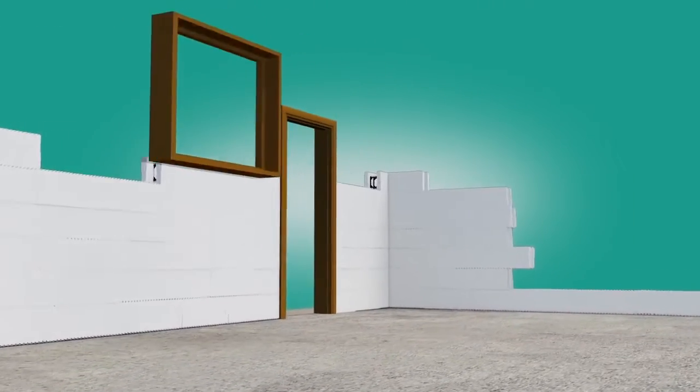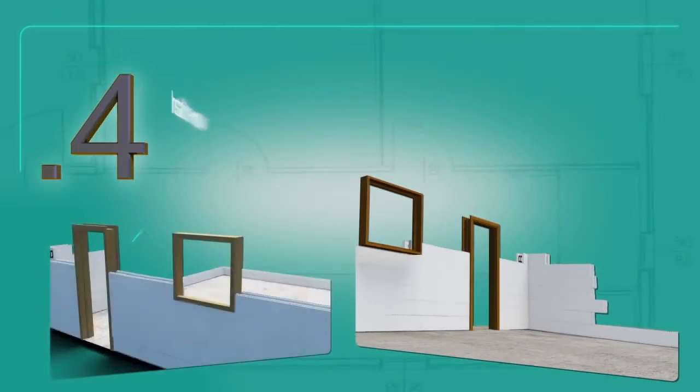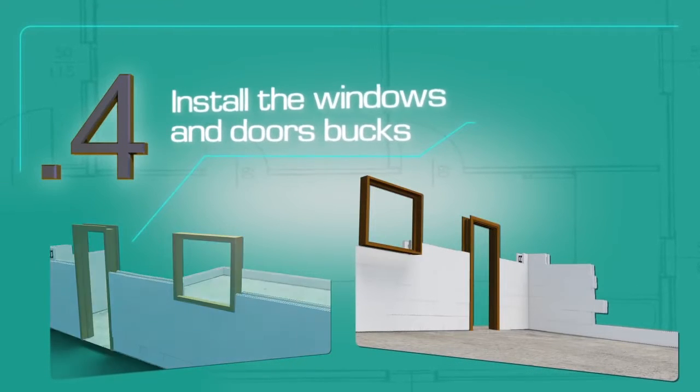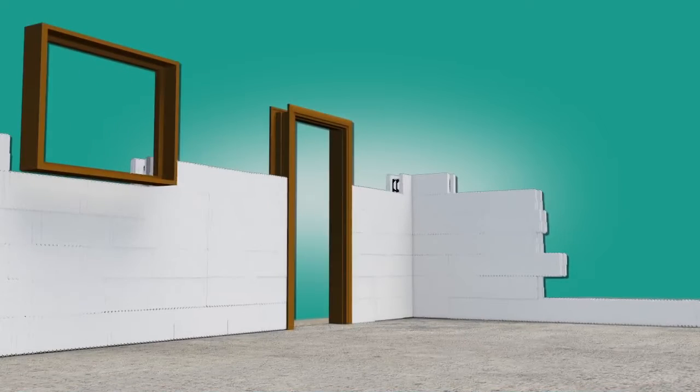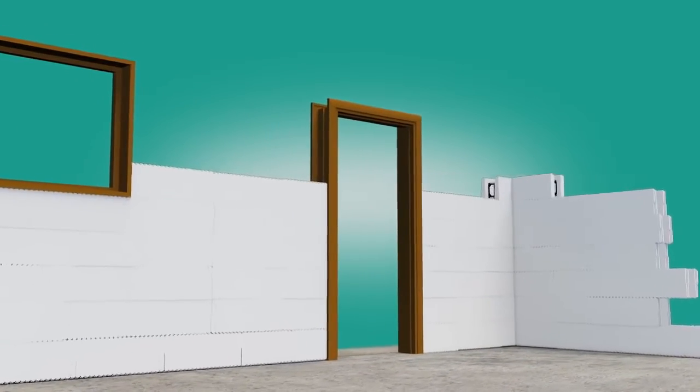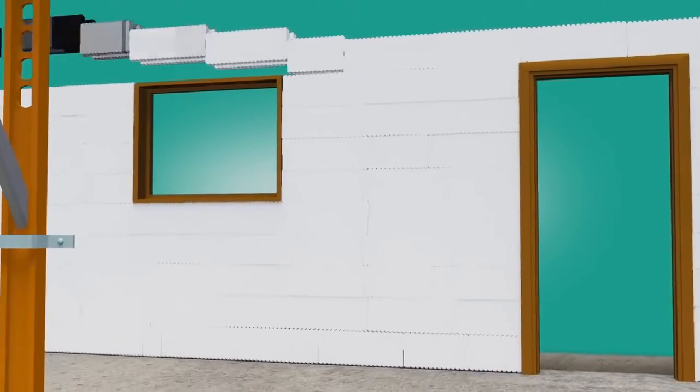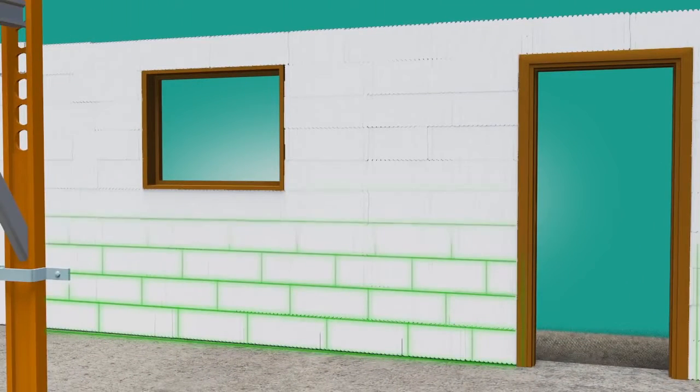Install window and door bucks at each location where an opening is required. Cut and fit the AMVIC blocks around them. Bucks are used to hold back the concrete and stay in place permanently, providing a nailing surface for the installation of windows and doors. Pressure-treated lumber or vinyl bucks may be used.